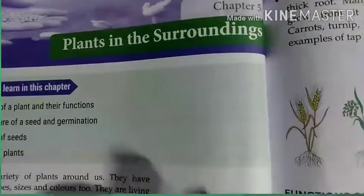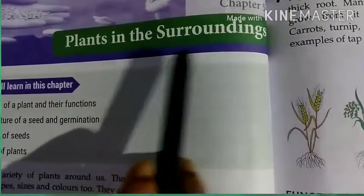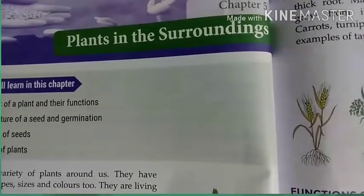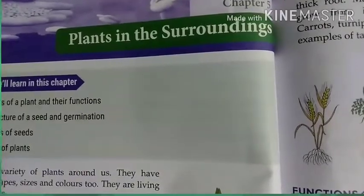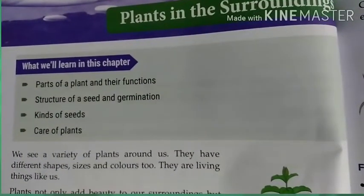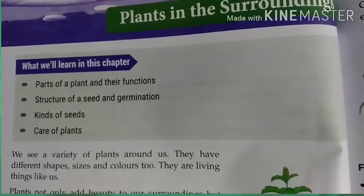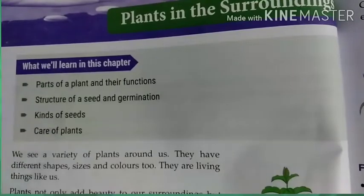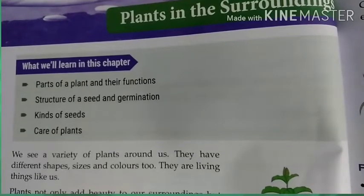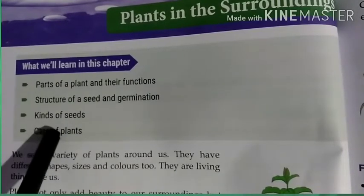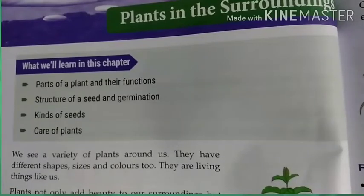The chapter name is Chapter 5: Plants in the Surroundings. Children, you must have seen lots of plants in your surroundings. In this chapter we are going to learn: first, parts of a plant and their functions. Next, structure of seed and germination — how seeds form, how they look, and how they germinate into a new plant — kinds of seeds, and care of plants.